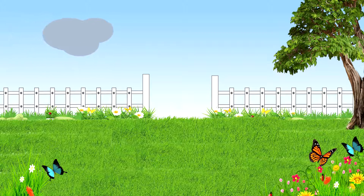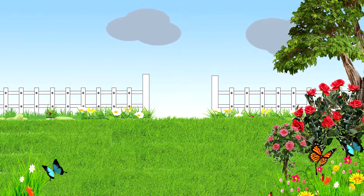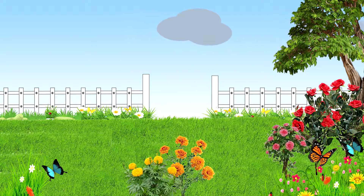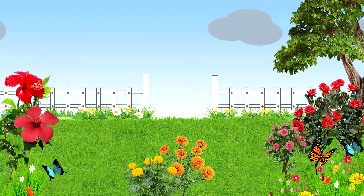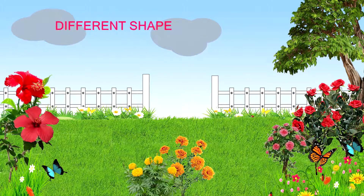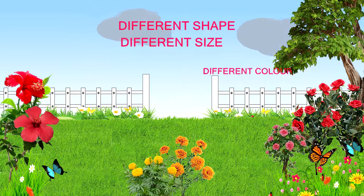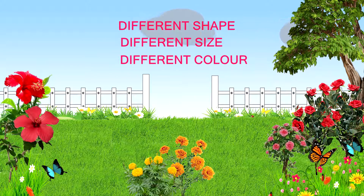Suppose in a garden there are some rose plants, some marigold plants, some chanarose plants. The variety of those flowers and plants in their shape, size, and colors is called the biodiversity of this garden.